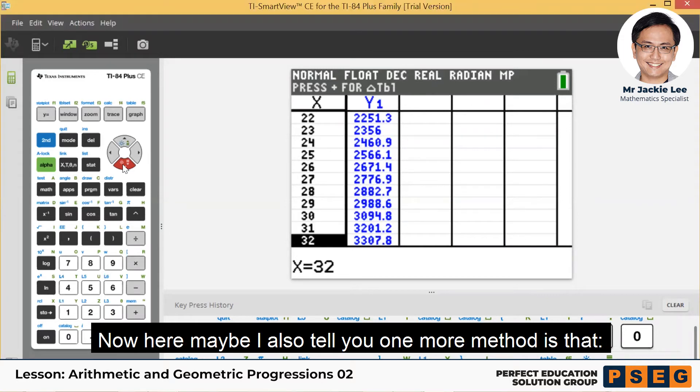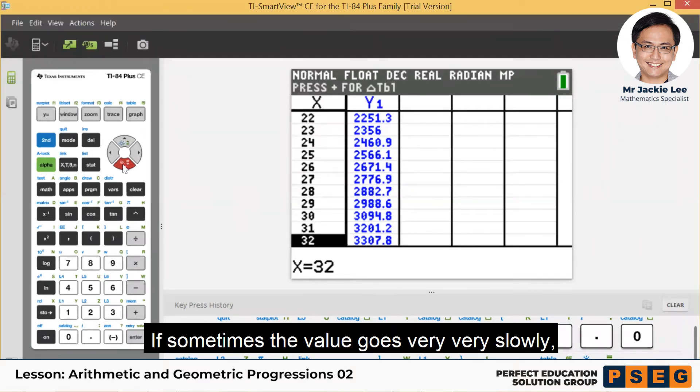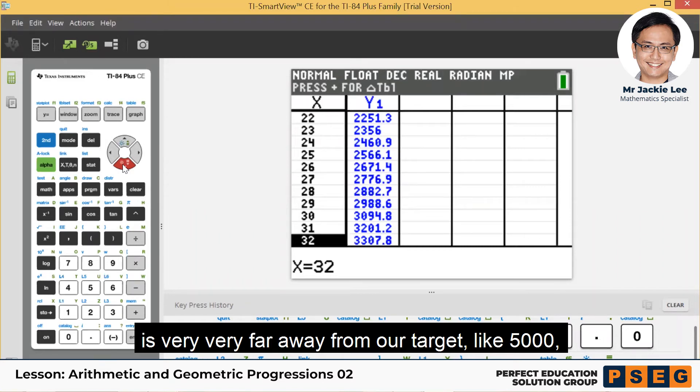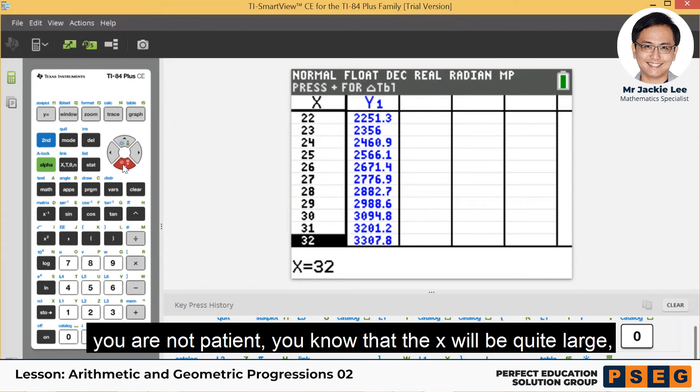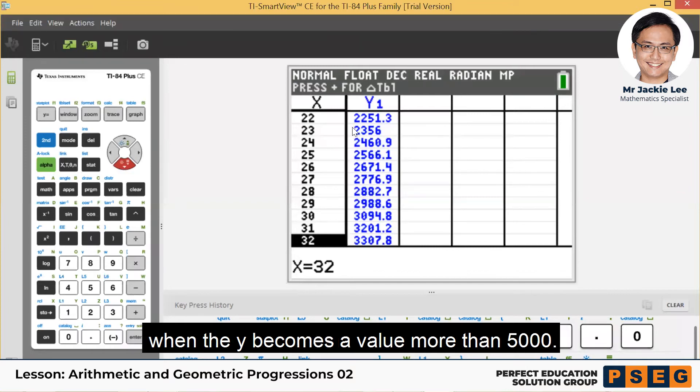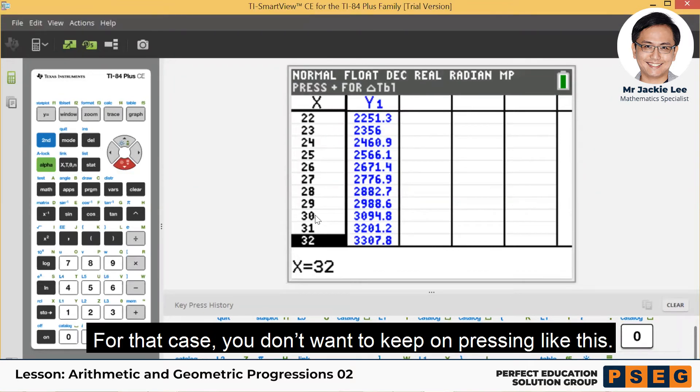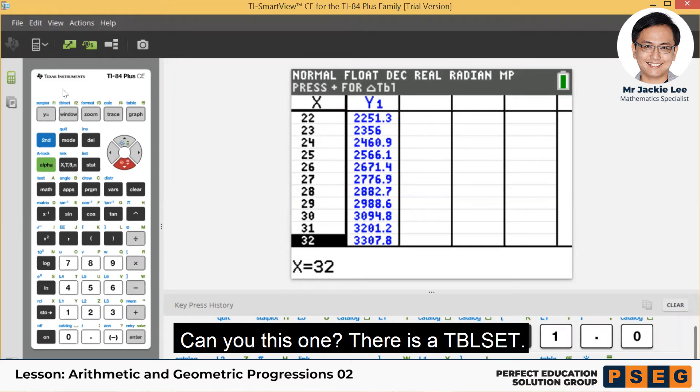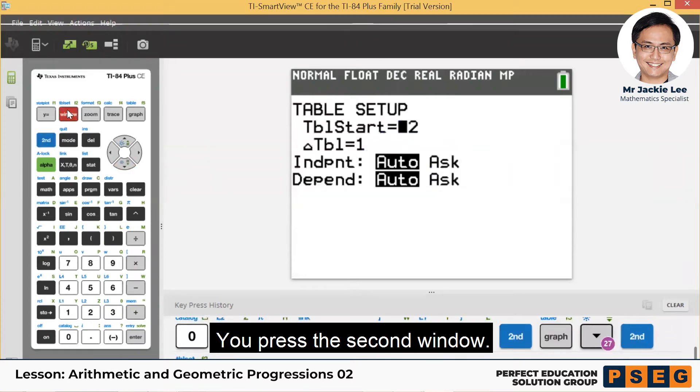Now here maybe I also tell you one more method. Sometimes the value goes very, very slowly. It's very far away from our target like 5,000. You are not patient. You know that the x will be quite large when the y becomes a value more than 5,000. For that case, you don't want to keep on pressing like this. Now we go to change the table. Can you see this one, there's a table set. You press the second window.